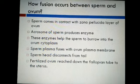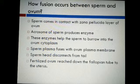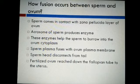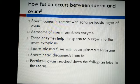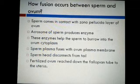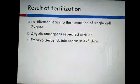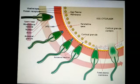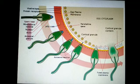When the sperm comes in contact with the zona pellucida layer, it induces changes in the membrane that block the entry of other sperm. The sperm has a head, middle part, and tail. In the head part, the acrosome is present. The acrosome produces enzymes that help the sperm burrow into the ovum cytoplasm, as you can see in this picture.